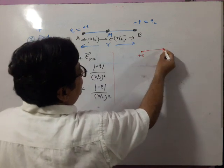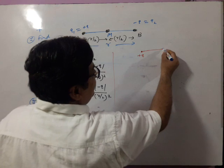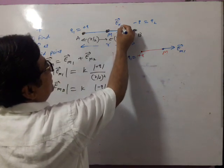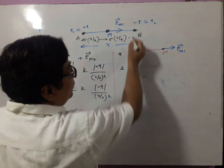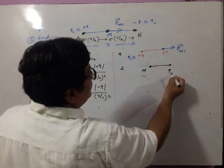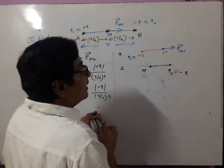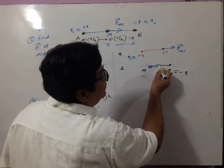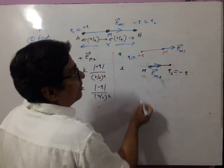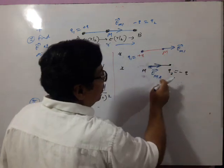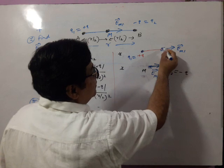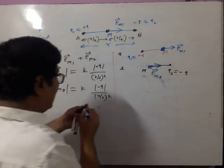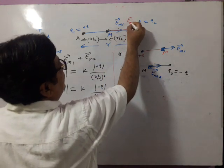Now direction. For plus Q, it is radially outward. Focus on Q1 and point M: for positive charge it is outward, away from positive charge. So electric field vector at M due to Q1 points to the right side. Now separately focus on Q2, which is minus Q. For minus, it is radially inward — from point towards negative charge. So electric field at M due to Q2 also points to the right side. You will see both vectors are coming in the same direction.